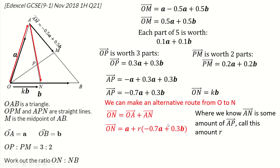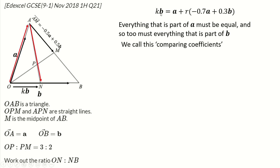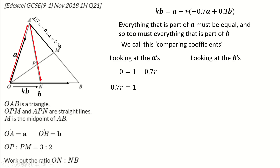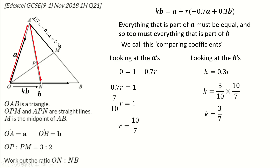Comparing A coefficients: 0 = 1 minus 0.7R, so R equals 10/7. Comparing B coefficients: K = 0.3R. Plugging in R = 10/7, the 10's cancel and K = 3/7. So O to N is three-sevenths of O to B, which makes N to B four-sevenths. That gives a ratio of O to N : N to B equals 3 to 4, and we're done.